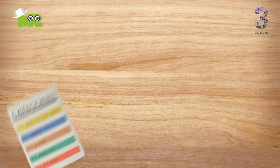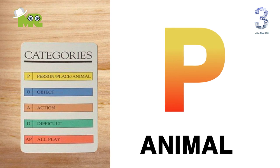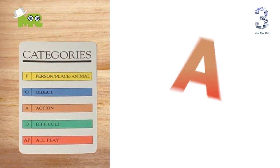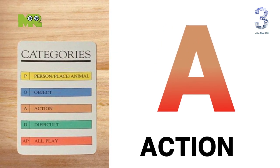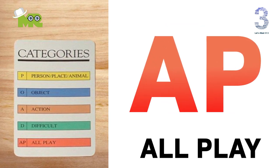Card categories. The different categories are P for person, place, or animal. O for object. A for action, such as an event. D for difficult words. And AP for all play.